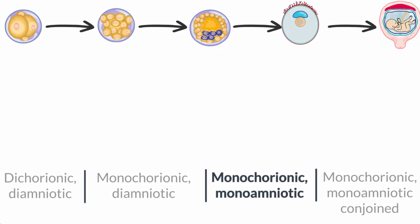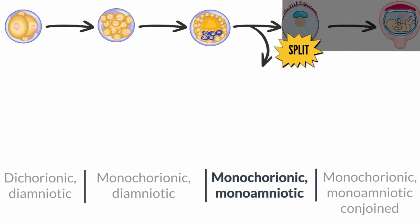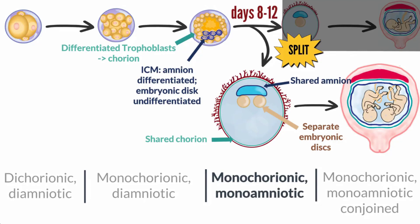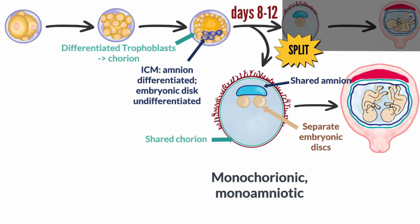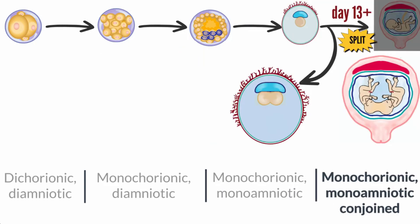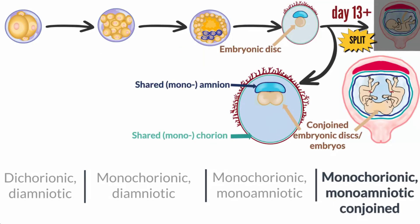Monochorionic-monoamniotic twinning occurs when the split occurs between days 8 and 12, after the differentiation of the chorion and amnion but before the formation of the embryonic disc, resulting in one shared chorion and one shared amnion around two separate monozygotic twins. Mono-mono twins represent about 1% of monozygotic twins. A split that occurs on day 13 or later results in conjoined twins, and the extent to which they are conjoined depends on how late the split occurs.